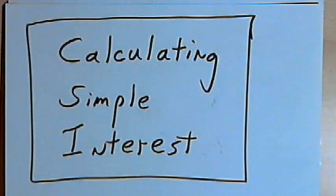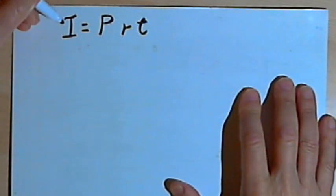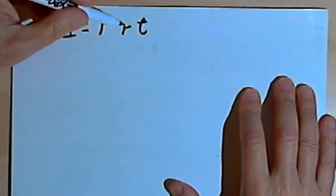So let's start out with the general formula for simple interest, and then we'll do a specific problem. So the general formula is I equals PRT.